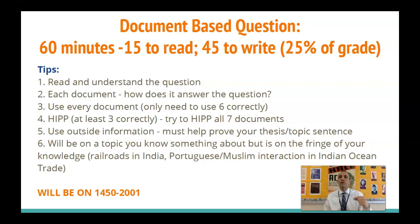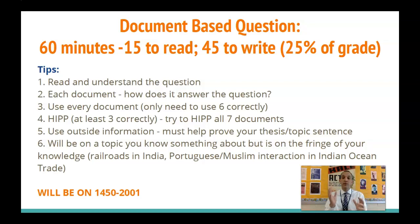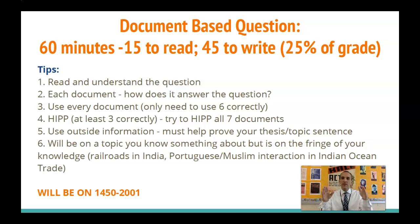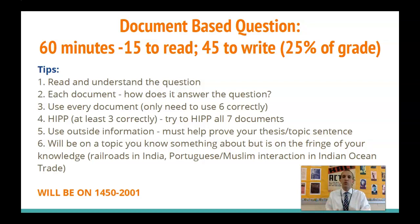The DBQ is usually on a topic you know something about, but it probably wasn't a major focus in class. For example, railroads in India — you should know the British helped build railroads when they imperialized India, but you may have only spent a couple minutes on it. You'll know that topic connects to imperialism, which is the overarching theme. Think of it as an umbrella topic you know well, and the specific question is a detailed thing under that umbrella. Also, the DBQ will only be on 1450 to 2001 — it will not cover circa 1200 to 1450.